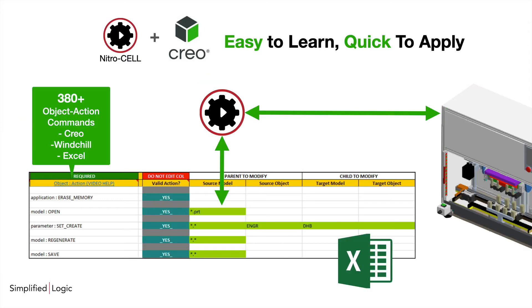When it comes to Creo automation, there is nothing quite like NitroCell. NitroCell is an Excel-based tool that has over 380 commands specific to Creo, Windchill, and Excel.